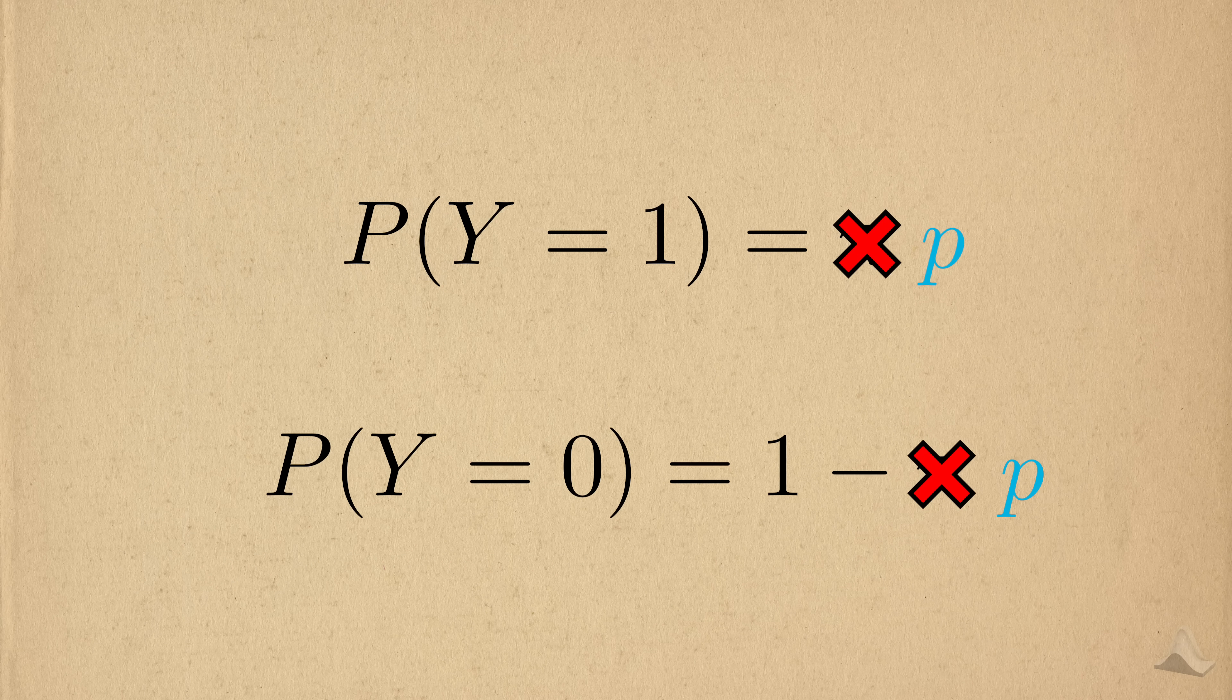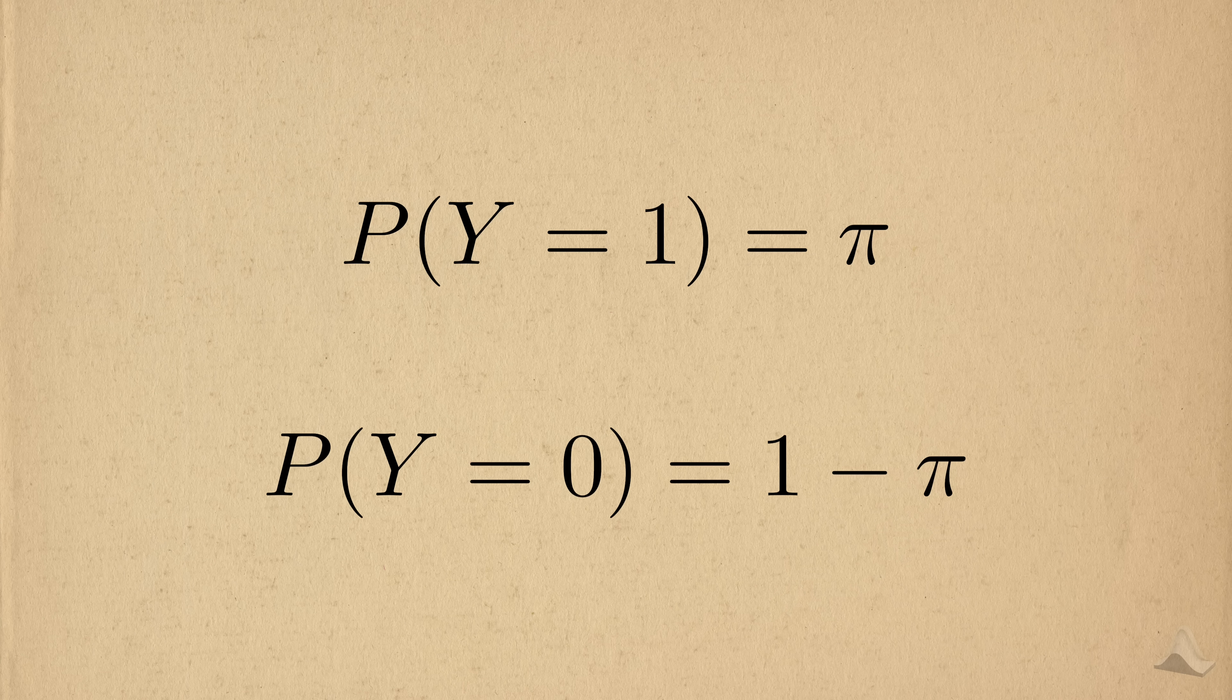Sometimes you'll see that p is used to represent the parameter, but I like using pi since it's what I used when I was first learning it. It also helps distinguish the parameter from this capital P, which represents the word, probability.